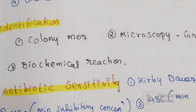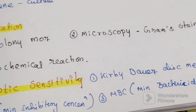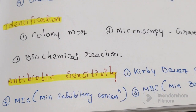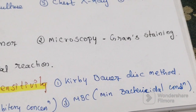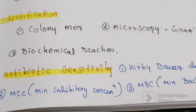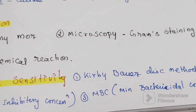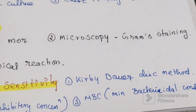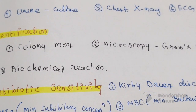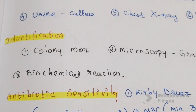For identification, colony morphology, microscopy, Gram staining, and biochemical reactions are performed. For antibiotic sensitivity testing, we use the Kirby-Bauer disc diffusion method, MIC (minimum inhibitory concentration), and MBC (minimum bactericidal concentration). These are the tests we can use for the diagnosis of bloodstream infection.